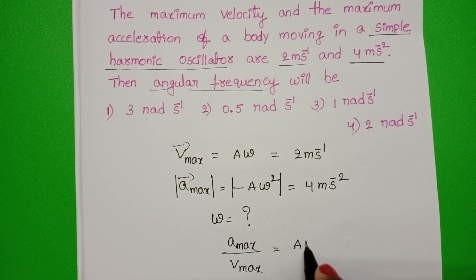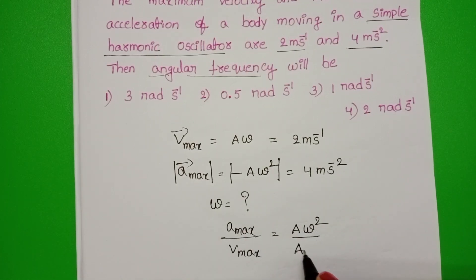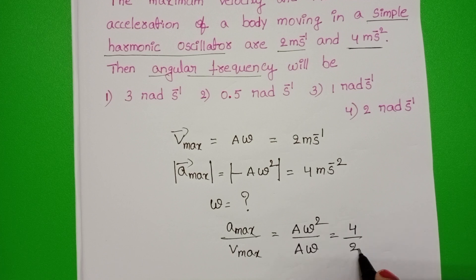A_max is A omega square by V_max which is A omega. Value 4 by 2.